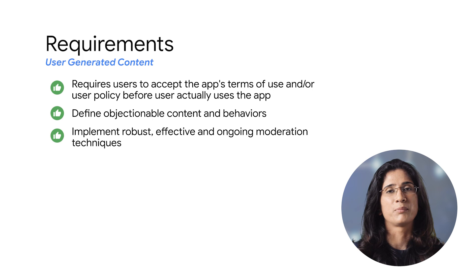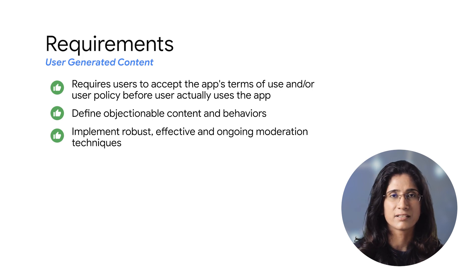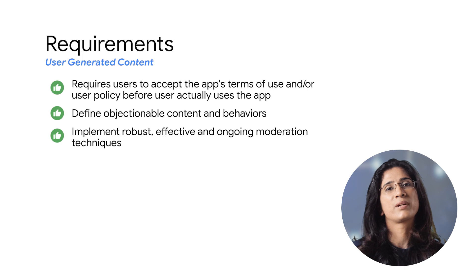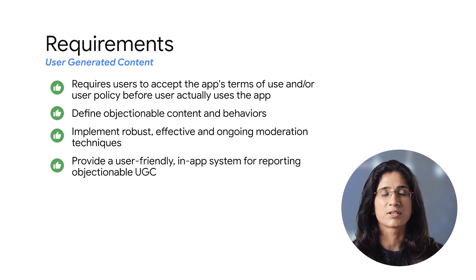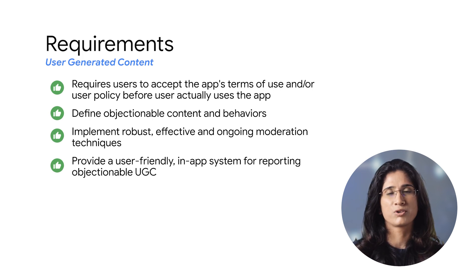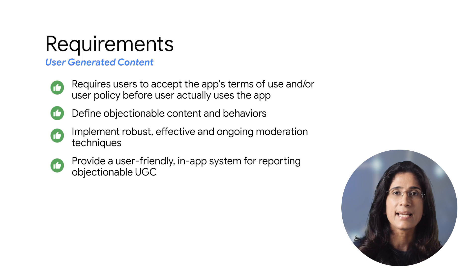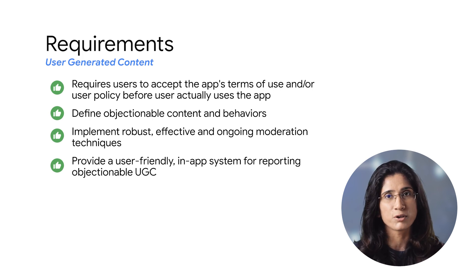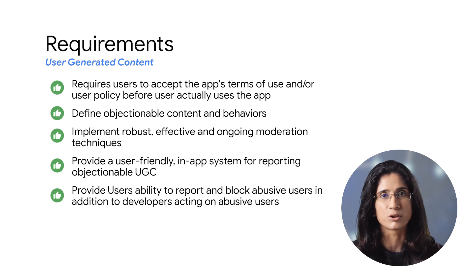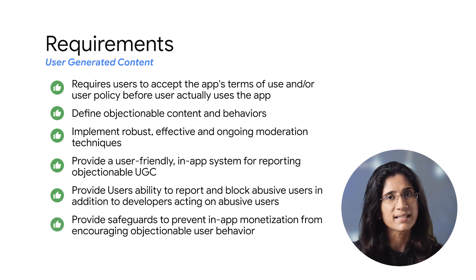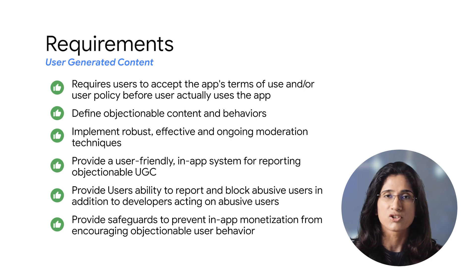Your app must implement robust, effective, and ongoing UGC moderation, as is reasonable and consistent with the type of UGC hosted by the app. The app should provide an in-app system for reporting objectionable UGC and users and take action against that UGC or user where appropriate. Your app must provide an in-app system for blocking UGC and users. The app should provide safeguards to prevent in-app monetization from encouraging objectionable user behavior.